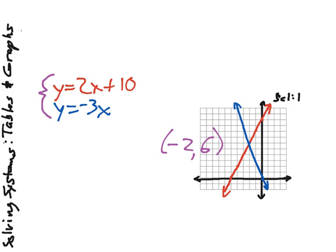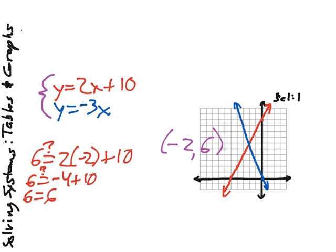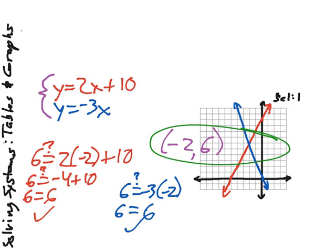Now to check to make sure this works, we plug it in and make sure it works for both equations at the same time. First we check the red one: is 6 equal to 2 times negative 2 plus 10? Is 6 equal to negative 4 plus 10? We have 6 equals 6, so that checks out. Now for the other equation: is 6 equal to negative 3 times negative 2? Negative times negative is positive, so we have 6 equals 6. That checks out. This is the one point on the entire graph where the two lines share a value.